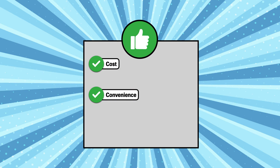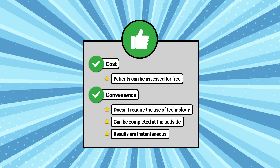Advantages of the 24-hour diet recall include cost and convenience. Patients can be assessed for free. It also doesn't require the use of technology, can be completed at the bedside in the acute care and long-term care settings, and the results are instantaneous, with the entire process generally taking 30 minutes or less to complete.